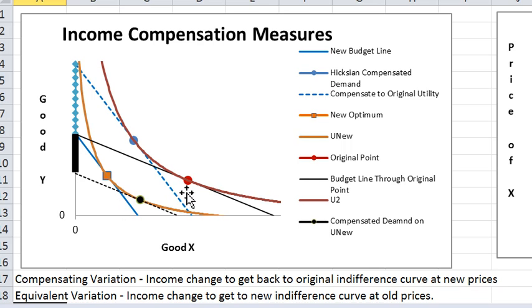I want to note here that good x and good y in this picture are both normal goods, and that partly explains it.